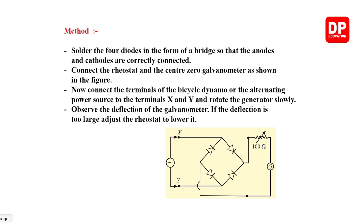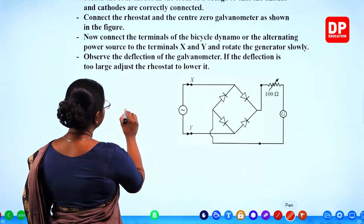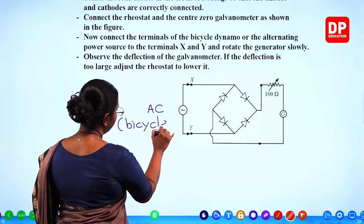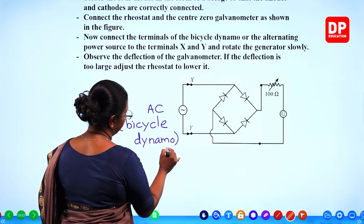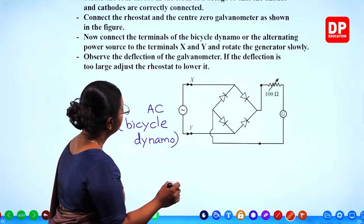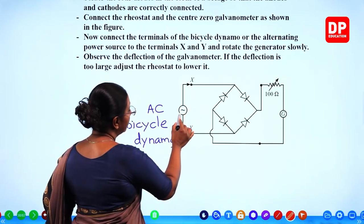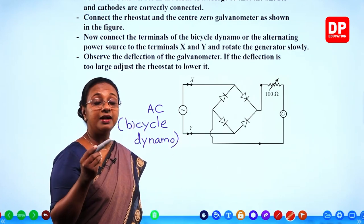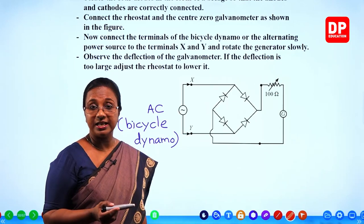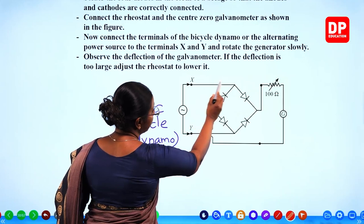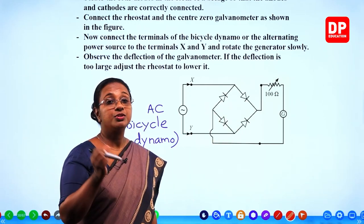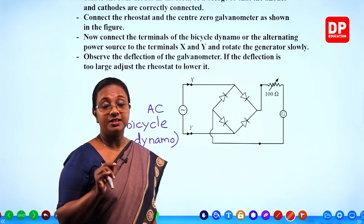Here we have the method. First, I will explain the diagram. You can see this represents the alternating current — we will use the bicycle dynamo. There are two points X and Y marked. The two arrows show that current can flow in both directions because this is alternating current: at one instance current flows from X, and the next instance from Y. That is the nature of alternating current.